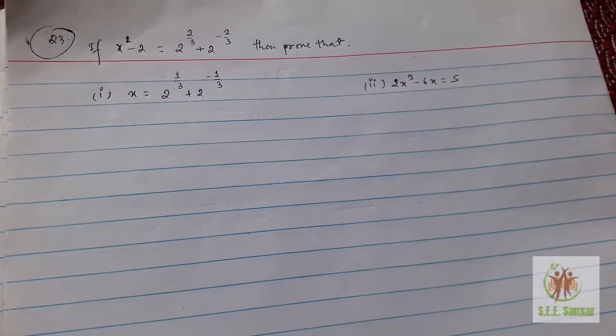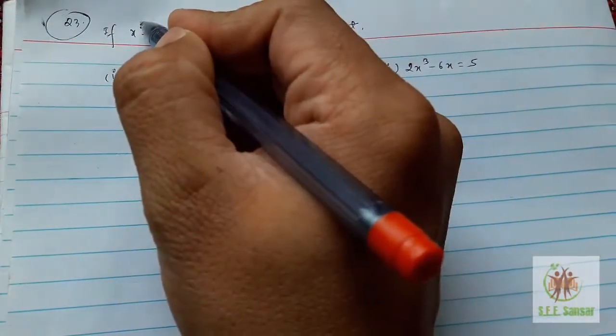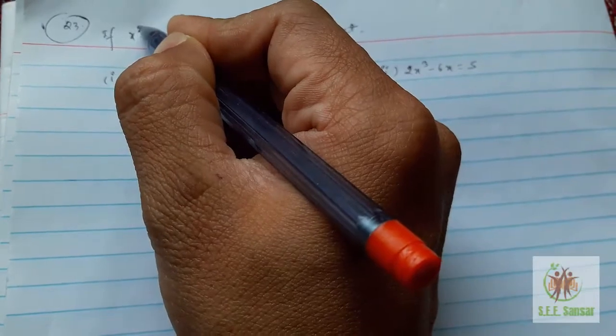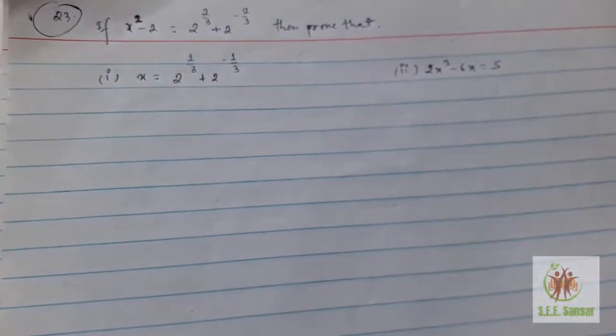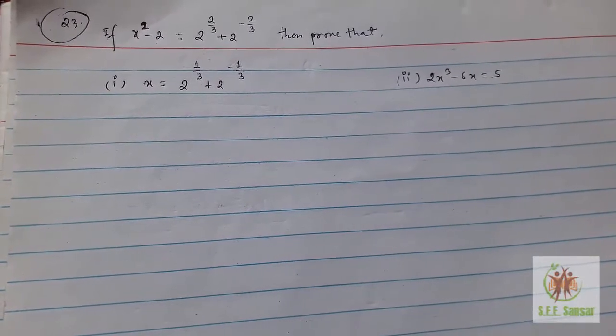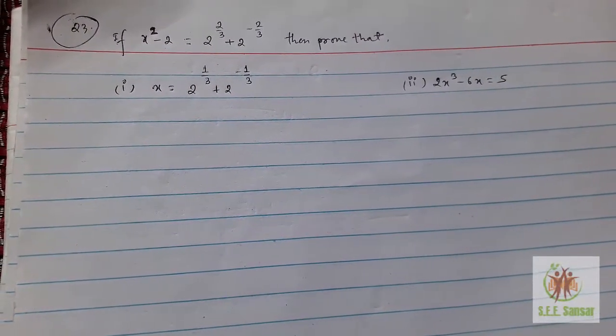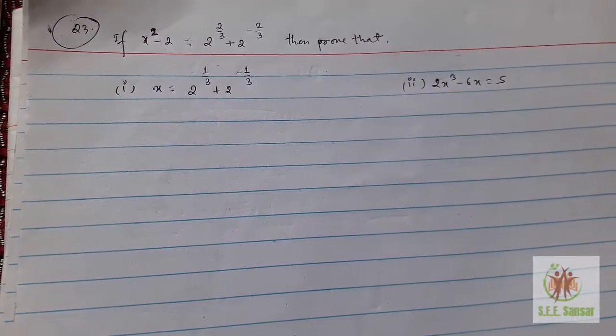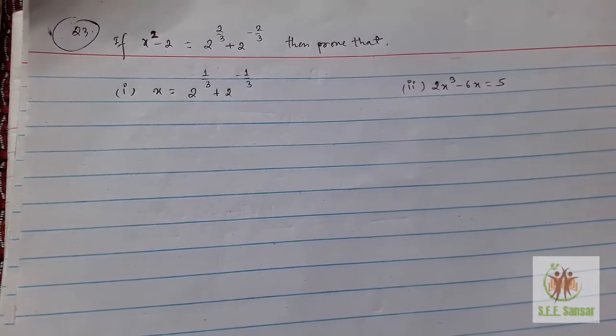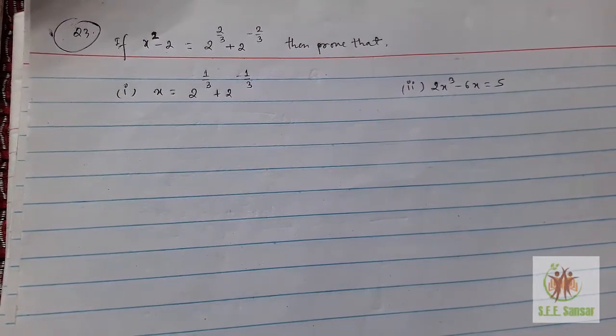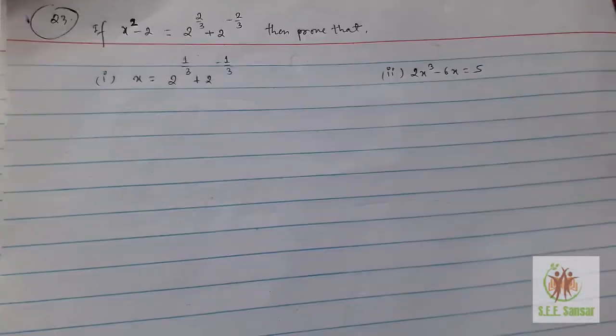x² - 2 = 2^(2/3) + 2^(-2/3), and then prove that x = 2^(1/3) + 2^(-1/3).